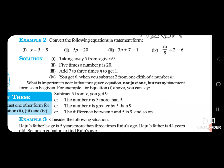M by 5 minus 2 is equal to 6. You get 6 when you subtract 2 from one-fifth of a number M. So the statement is: subtract 2 from one fifth of a number M to get 6.